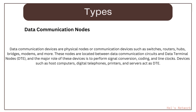Data communication nodes are physical nodes or communication devices such as switches, routers, hubs, bridges, modems, and more. These nodes are located between data communication circuits and data terminal nodes (DTE). The major role of these devices is to perform signal conversion, coding, and line clocking. Devices such as host computers, digital telephones, printers, and servers act as DTE.